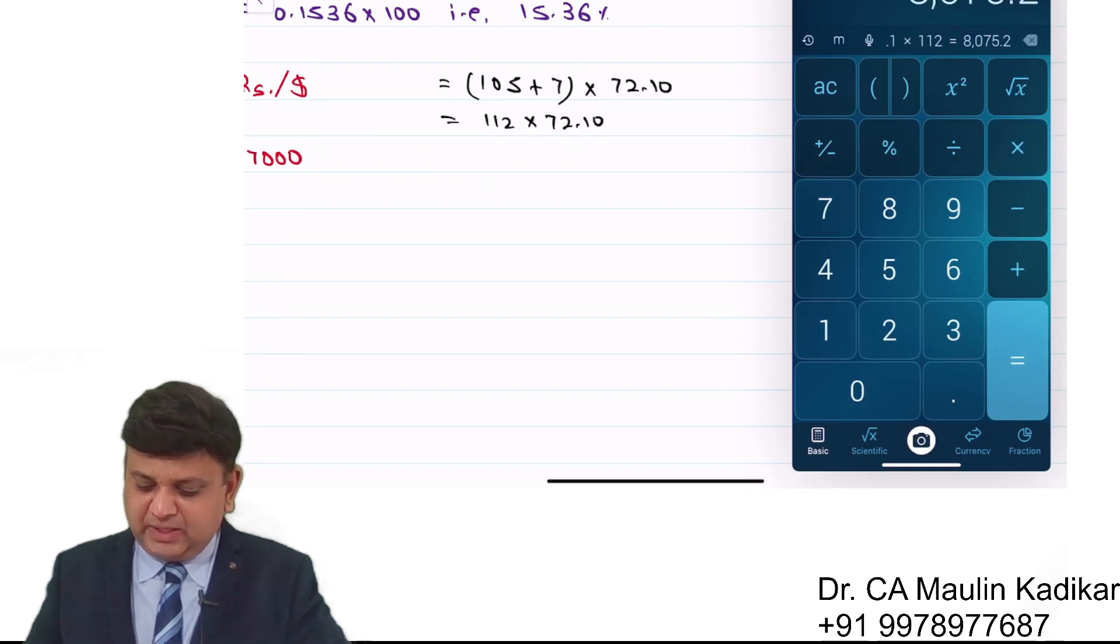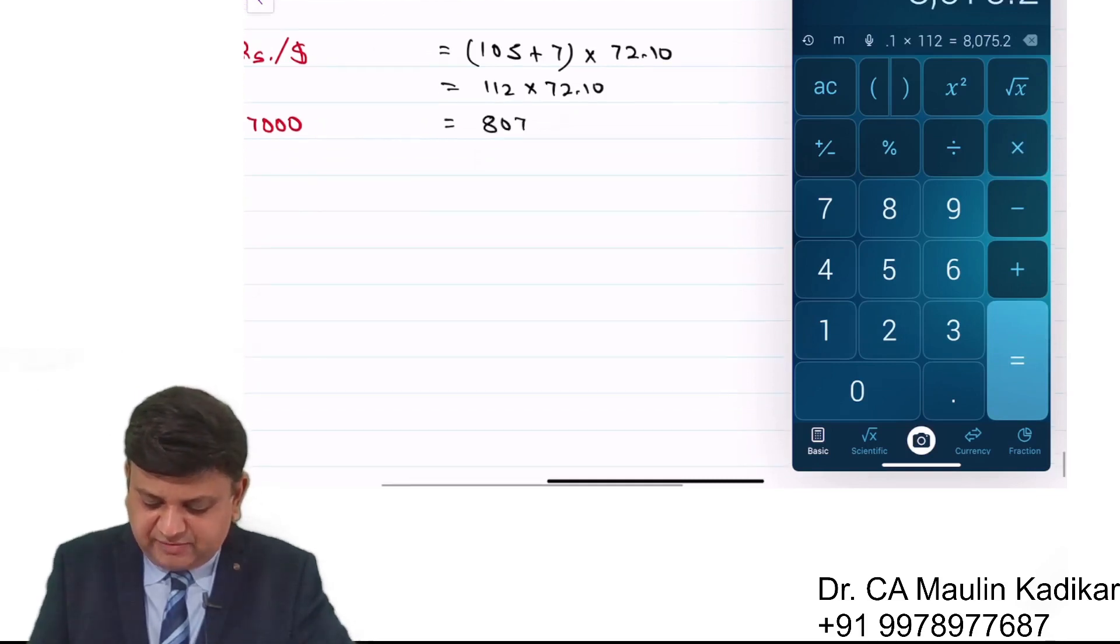So 72.1 into 112. What will happen? It is 8075.2.